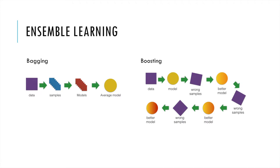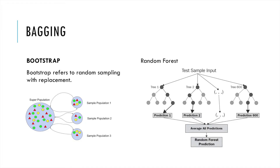From the name we can understand that bagging — we think of the whole data set and we just use some bags to hold samples into buckets, just like bagging for the whole data set. For boosting, we gradually use a better model to train it. The basic technique for bagging is called bootstrap, which means random sampling with replacement.